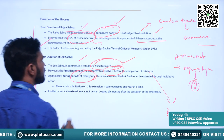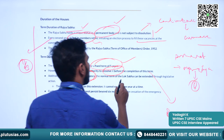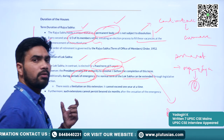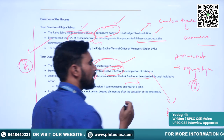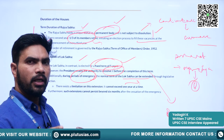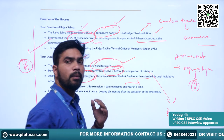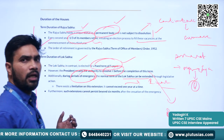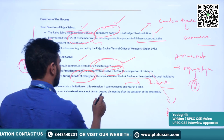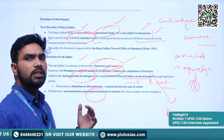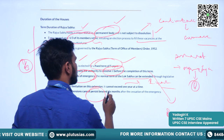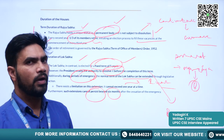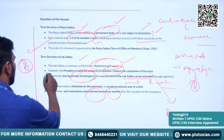During periods of emergency, the normal term of Lok Sabha can be extended through legislative action. However, whenever the term of the Lok Sabha is extended, it should not be more than one year at a time. Similarly, when the emergency ceases, within six months that house has to be dissolved if it crosses its tenure of five years.